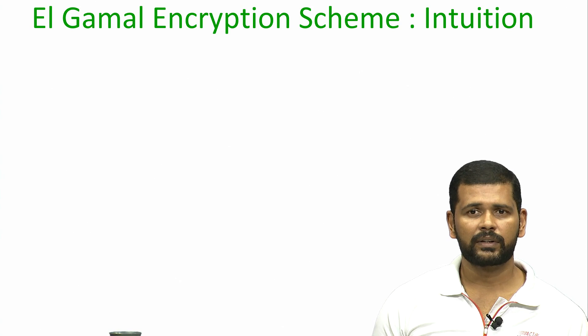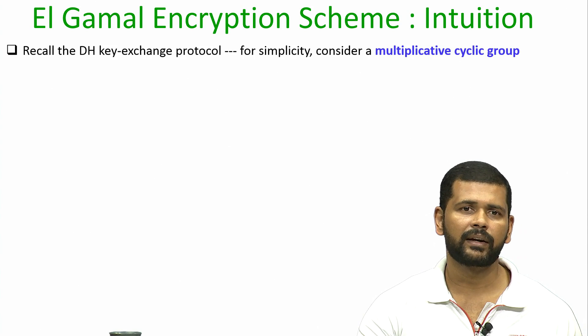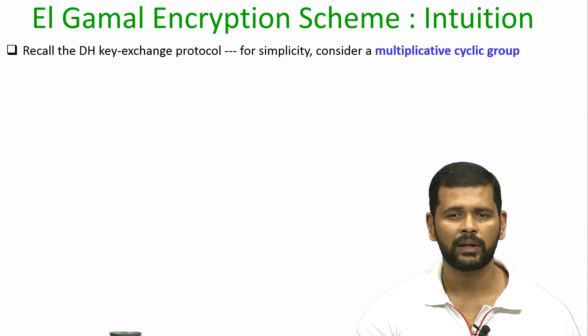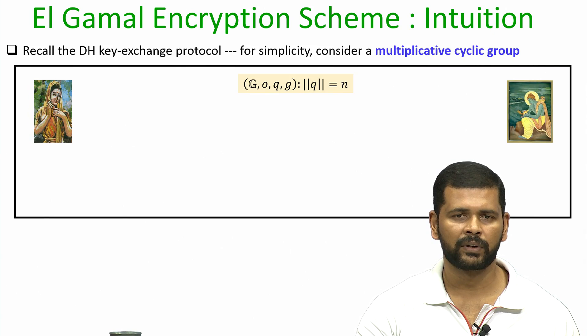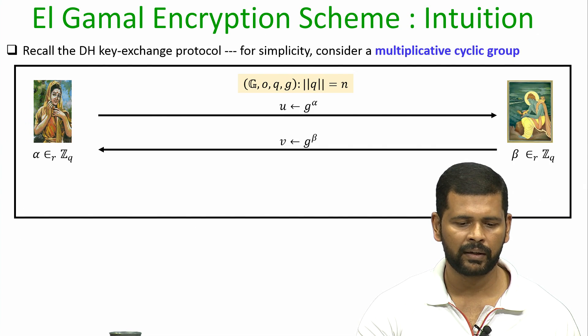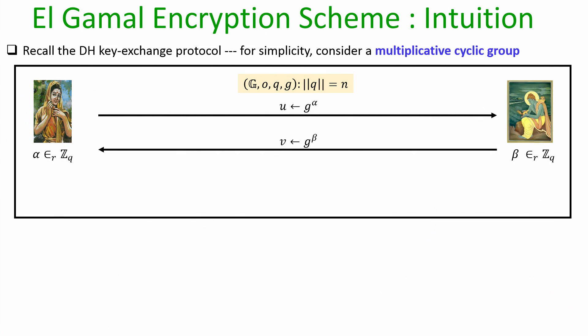Let us try to understand the intuition of the ElGamal encryption scheme. Recall the Diffie-Hellman key exchange protocol and for simplicity assume we are considering a multiplicative cyclic group. The public parameter is the description of a cyclic group, a generator, and a size of the group Q. In the Diffie-Hellman key exchange protocol, Sita and Ram want to agree upon a key — each of them picks their own contribution for the overall key.